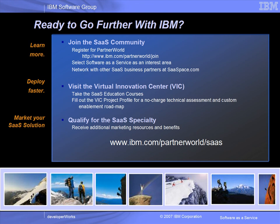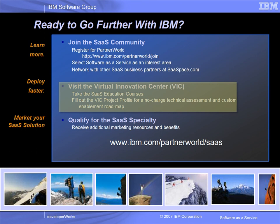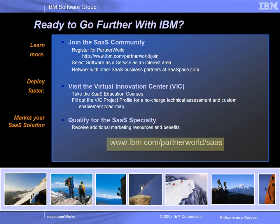IBM has innovative resources and programs to help you manage change and become relevant in the software-as-a-service market. Whether you're an ISV, system integrator, or reseller, we can provide education, support, and benefits to help you grow revenue and differentiate yourself. The first step is to join the SaaS community, where you will automatically be kept aware of new SaaS technical benefits and workshops and get the enablement help you need to transform your application for delivery in the IBM Software-as-a-Service model. As a member of the IBM SaaS community, you can register at the Virtual Innovation Center (VIC), where you will get personalized access to product support and education. As an advanced-level member of PartnerWorld, you have the opportunity to gain access to additional marketing and sales support by qualifying for the Software-as-a-Service specialty. For more information, visit www.ibm.com/partnerworld/SaaS.